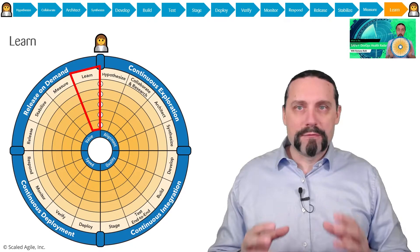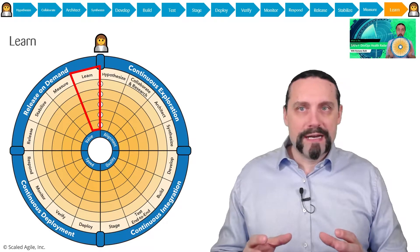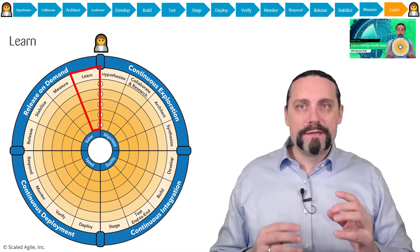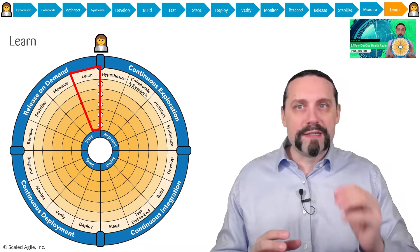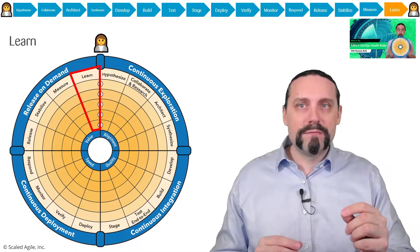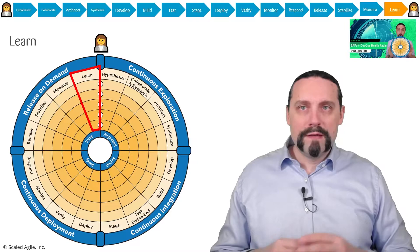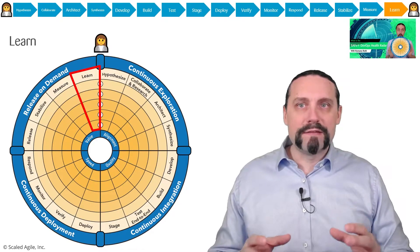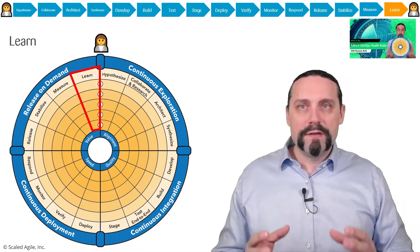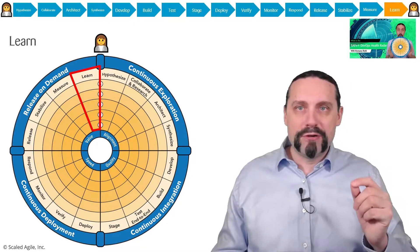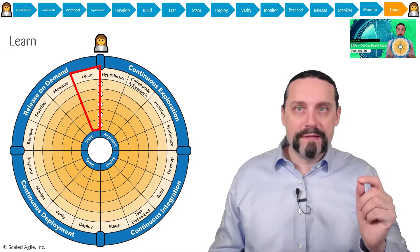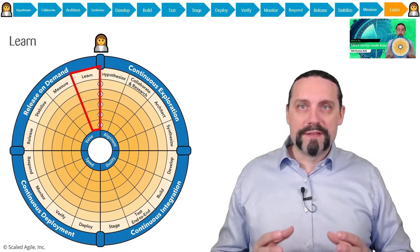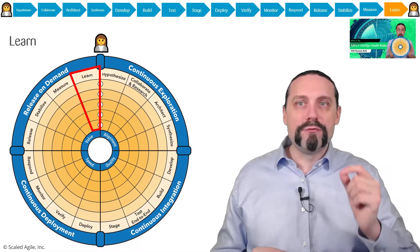We continue monitoring our production system, and if something happens we respond as a whole team to incidents. When the business says the time is right to release the functionality to the customer, we switch the feature toggle on. With the feature toggle on, we stabilize the production environment so we can meet our SLAs. Then we measure whether the hypothesis identified in the hypothesis step is valid or not valid.